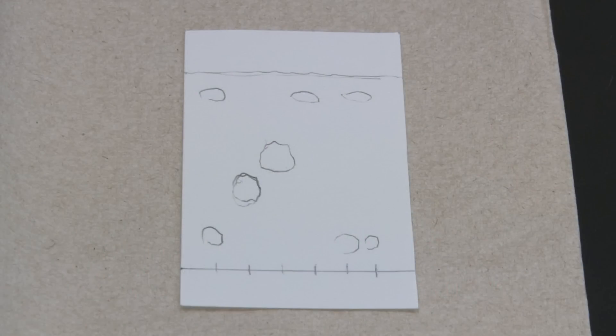Compare your unknown spots to the known spots. You should be able to match its components to the knowns based on how far they traveled. For instance, in this TLC plate, the unknown has two components which match the known samples in positions 4 and 5.